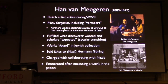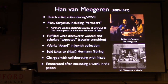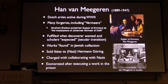Van Meegeren sold fakes to the Nazis, including this painting he sold to Hermann Göring. Later, he was charged with collaborating with the Nazis by giving them this great masterpiece. He was put in jail and protested wildly, saying it wasn't by Vermeer — but nobody believed him. And so in prison, he painted another painting in the style of Vermeer and exonerated himself. There are lots of stories like that.